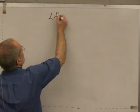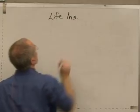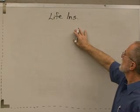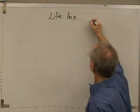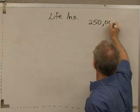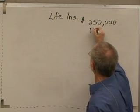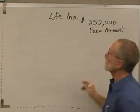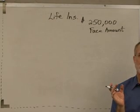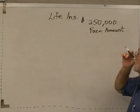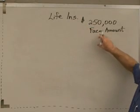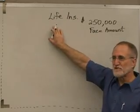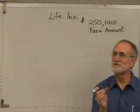Let's talk about life insurance. When we talk about life insurance, let's say we want a $250,000 policy — we call that the face amount. What it really is is a death benefit. It means if the insured dies, then the beneficiary gets this $250,000. So it's really not life insurance; it's really death insurance. We're insuring our death.